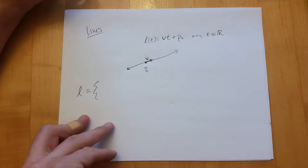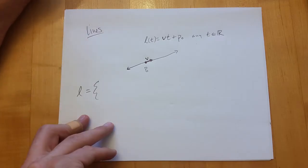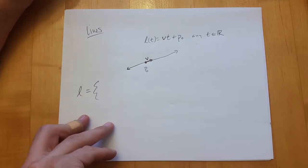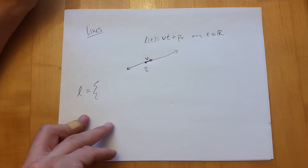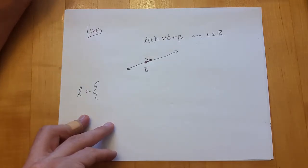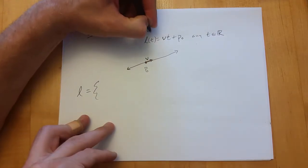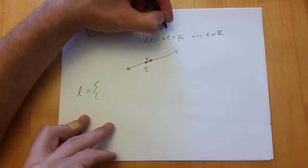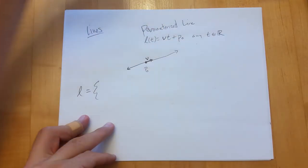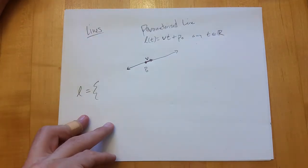Think of t as a scalar — we use t thinking about time. At time zero, you're right at the starting point. As t increases, you go more in the direction of v. The point p-naught depends on the problem — unless you're intersecting two planes, in which case you'd find a point common to both planes.